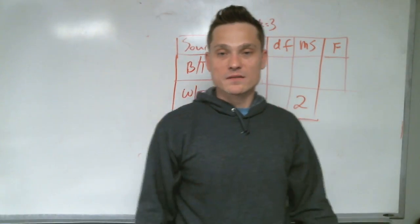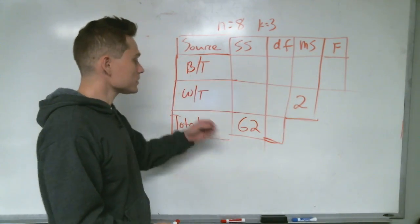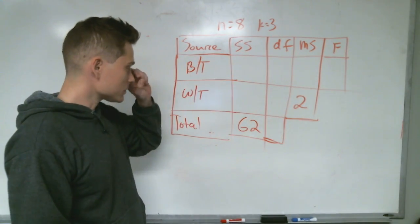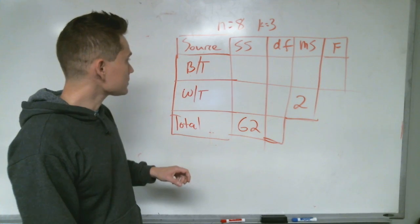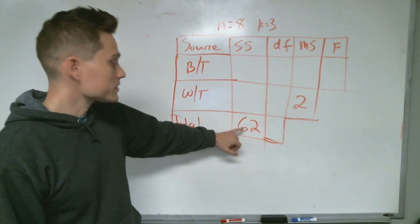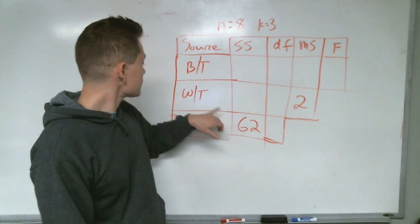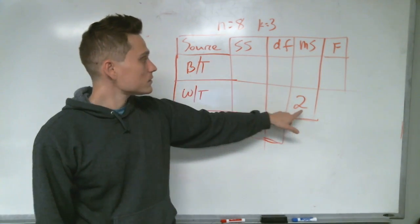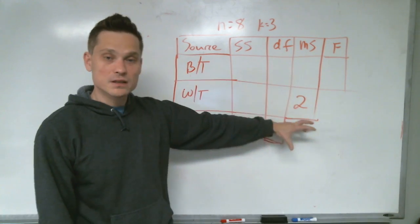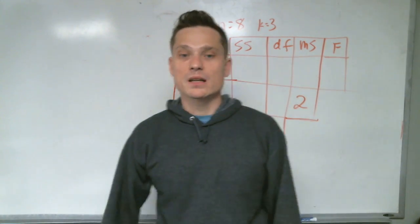Hey guys, welcome. In this video we are going to complete the following ANOVA table. What we are told is the total sum of squares is 62, the mean square for within is 2, and you have to fill in the other cells with the correct values.